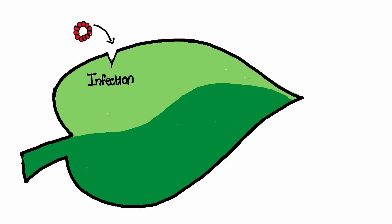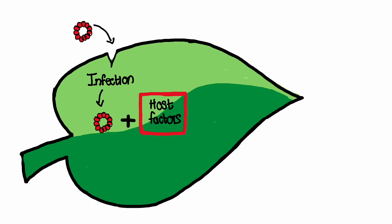Viroids are unique in their ability to replicate and spread within plant cells. They enter the host plant through wounds, natural openings, or by insect vectors. Once inside the plant, viroids exploit the cellular machinery to replicate and spread to other cells. Viroid RNA is transcribed by the host plant's enzymes, generating multiple copies of the viroid genome.